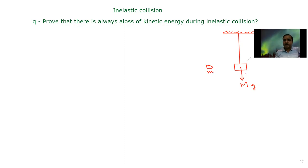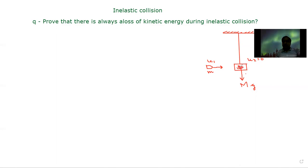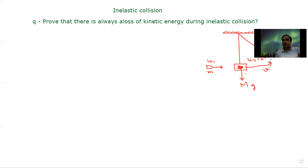Suppose the initial velocity of the second body is U2 = 0, and the first body has initial velocity U1. This bullet or other body is moving towards the block of mass capital M. When it enters the block, after inelastic collision, it gets embedded inside the block. The whole system — block and the bullet inside — then starts moving together with velocity V.